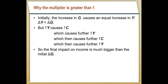The multiplier is greater than one because of a feedback loop. The initial increase in government spending causes an increase in income, but that increase in income also increases consumption. When consumption increases, because Y equals C plus I plus G, when C goes up, Y goes up. And when Y goes up, C goes up — it starts to feed on itself. This increase in G increases Y, that increase in Y increases C, which increases Y, which increases C, and so on. The final impact of the change in government spending is actually a lot greater than that initial change.